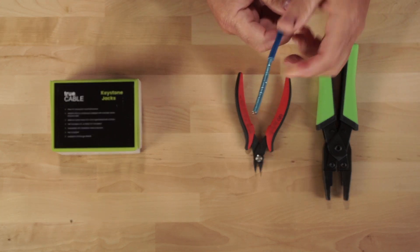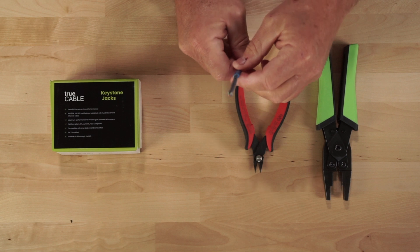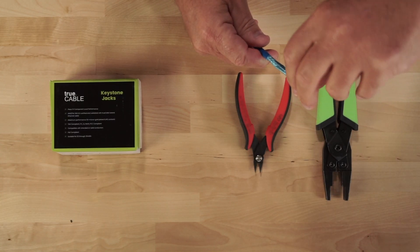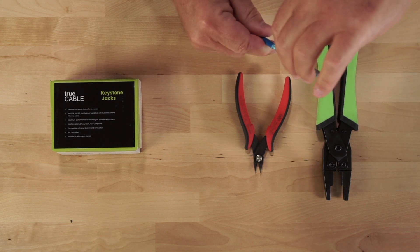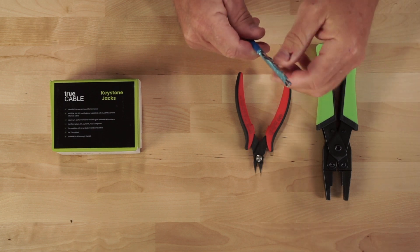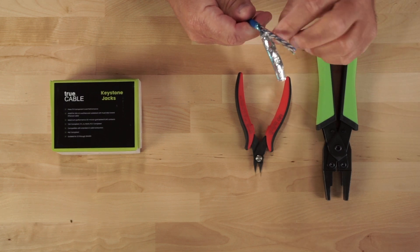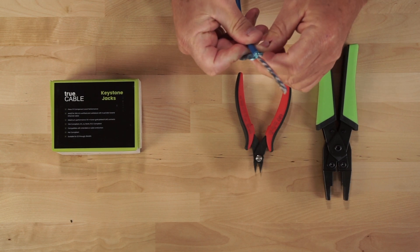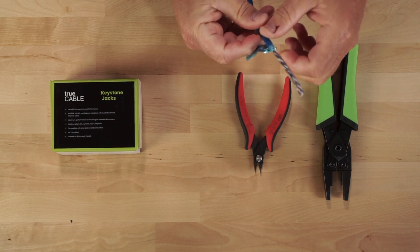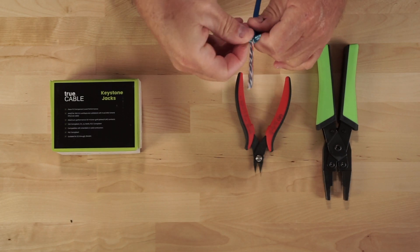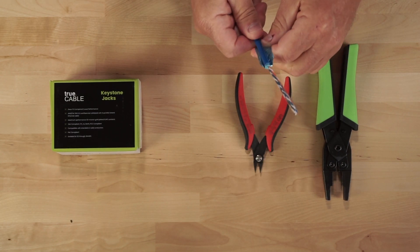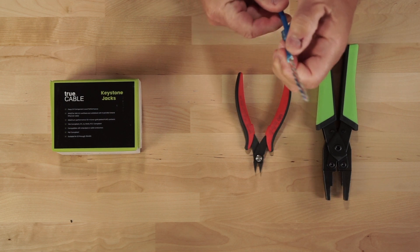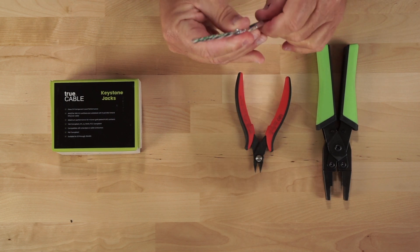So the next step is we're going to carefully peel back the shield. Again, you don't want to damage it, you don't want to remove it. You just want to peel it downward, nice and gently, and then just get it wrapped around the jacket.